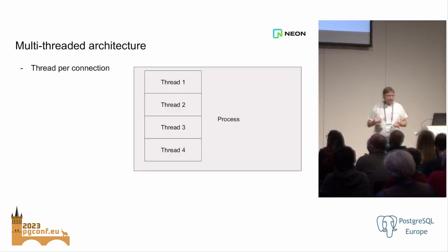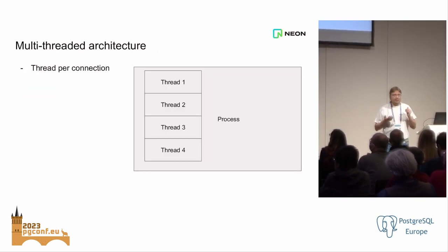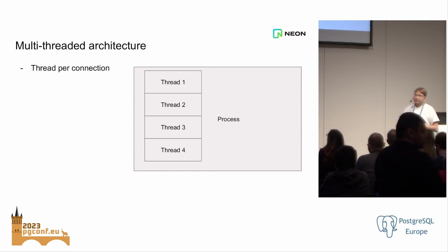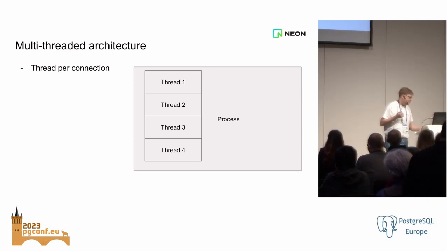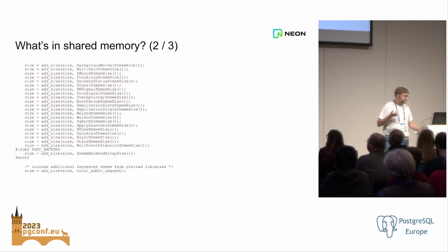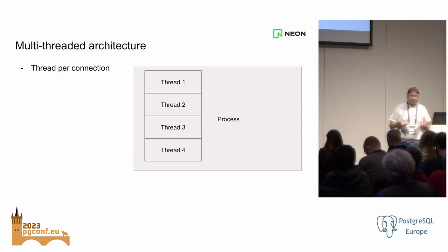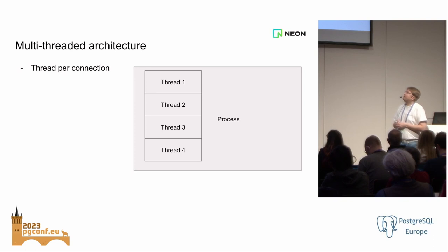In a multi-threaded architecture, it kind of looks the same, except that everything runs in a single process and a single address space. The big difference is that all of these data structures don't need to be fixed size — you can do more flexible stuff. You can just allocate a piece of memory and pass a pointer to a different thread, which is a lot more convenient for developers who need to work with this stuff.